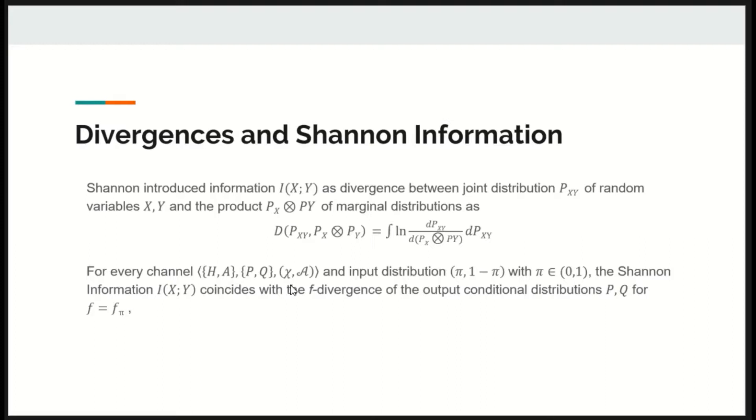the Shannon information coincides with the F-divergence of the output conditional distributions P,Q for F equals F_pi, where F_pi is given by the following equation. In other words, information between X and Y is nothing but the F_pi divergence between P and Q.